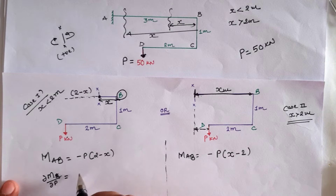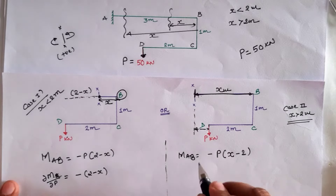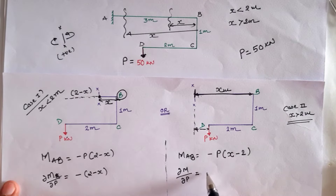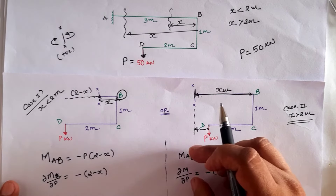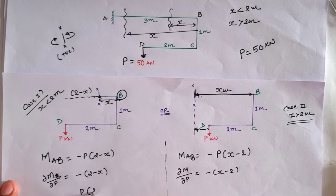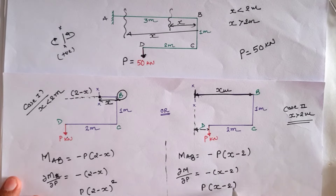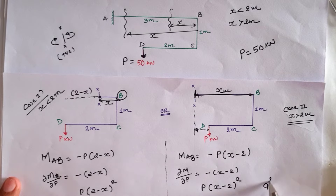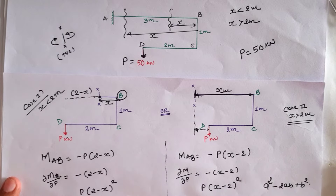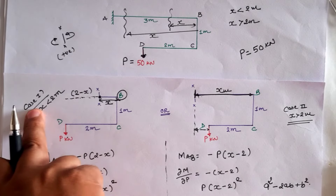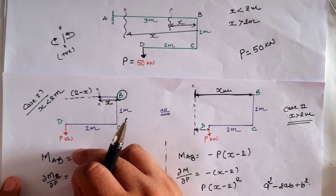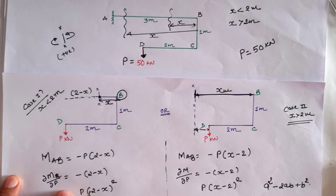Both cases have different moments, but if we take del Mx by del P, the value is minus (2 minus x) for the first case and minus (x minus 2) for the second case. Multiplying these values with their respective moments gives P into (2 minus x) squared and P into (x minus 2) squared. Since (a minus b) squared equals (b minus a) squared, the multiplication of the moment with del Mx by del P is constant for both cases.